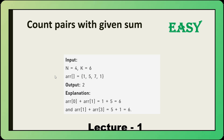In this video, we are going to solve a problem called 'Count Pairs with Given Sum' and the difficulty of this problem is easy. Let's try to understand the problem statement. We will be given one integer array which is going to hold only positive numbers, along with one K value — 6 here. We need to find the number of pairs which satisfies K in the array.